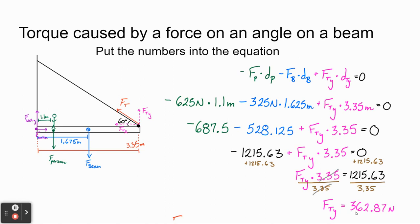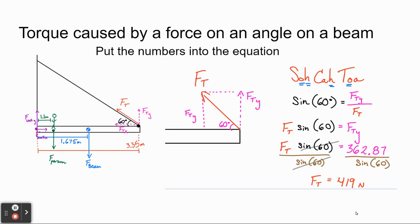Now that I know FTY, I use SOHCAHTOA to find the actual tension at the angle. FTY is the side opposite the 60-degree angle, and the total tension FT is the hypotenuse. So sine of 60 degrees equals FTY divided by FT. Rearranging: FT equals FTY divided by sine 60 degrees. Plugging in 362.87 and solving gives a tension of 419 Newtons.